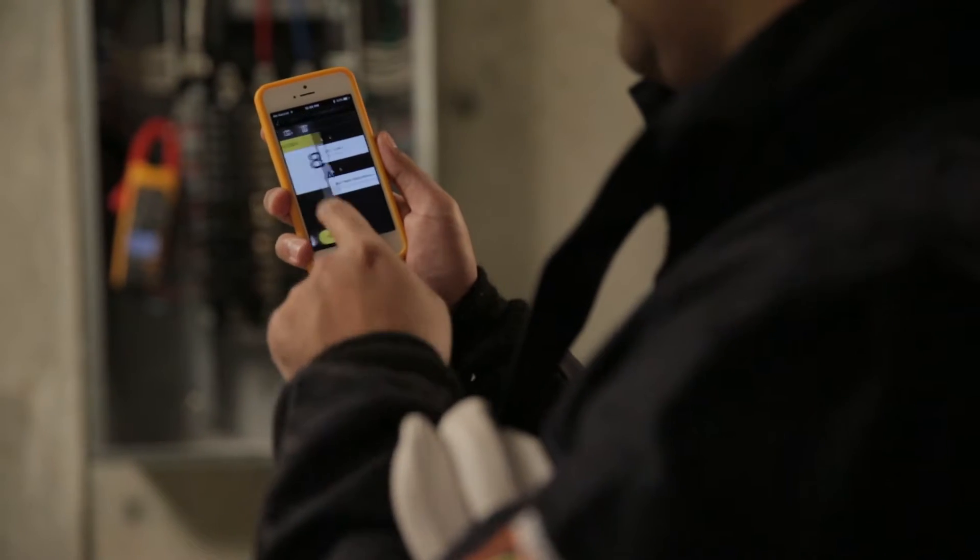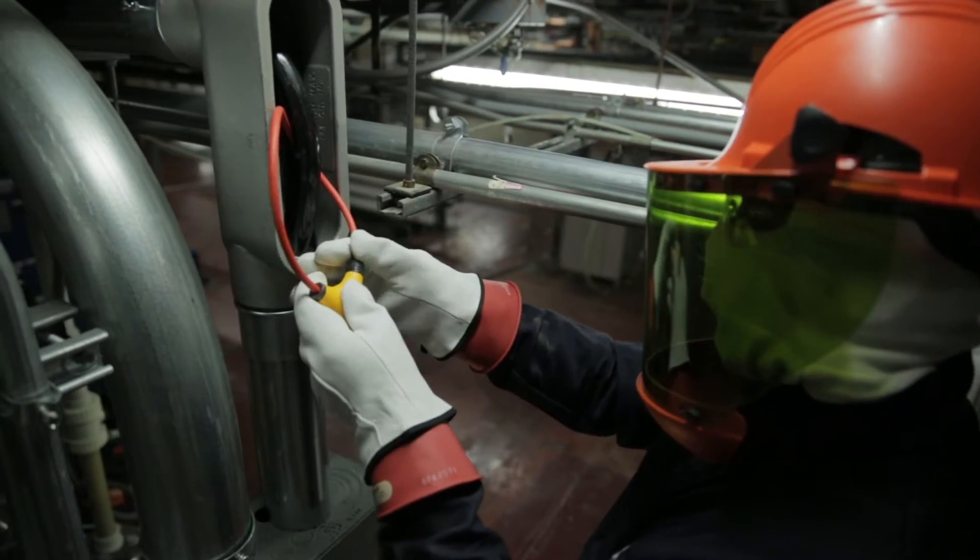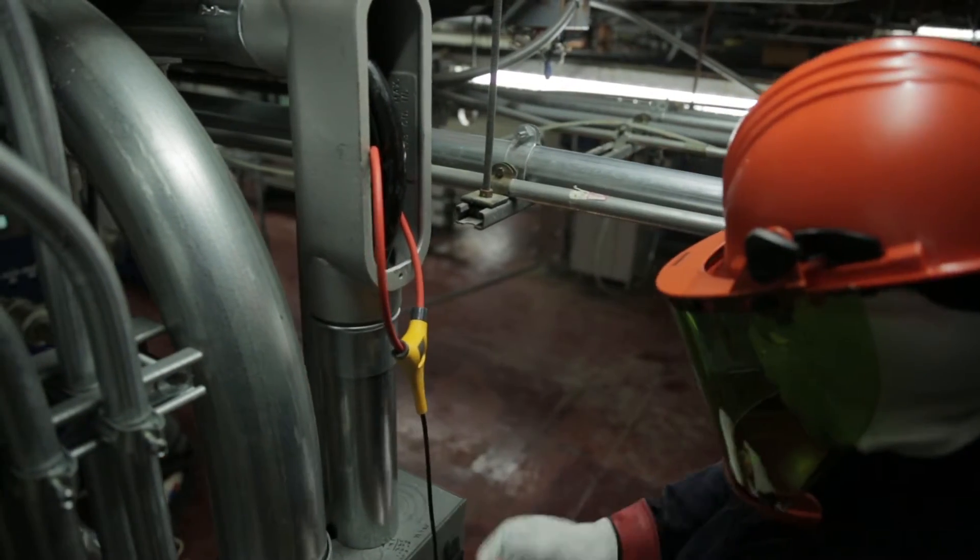The 376 FC True RMS AC/DC clamp meter with iFlex lets you access tight places and around large and awkward conductors.